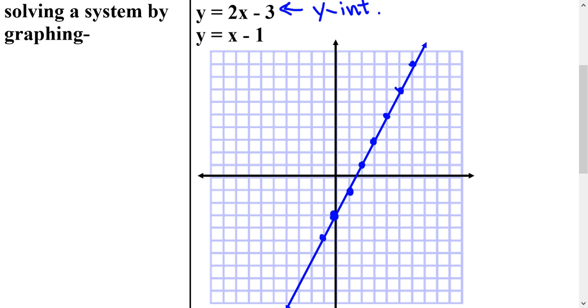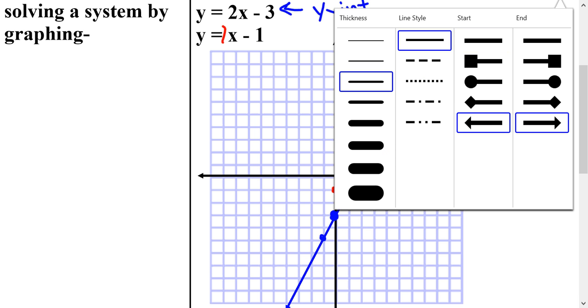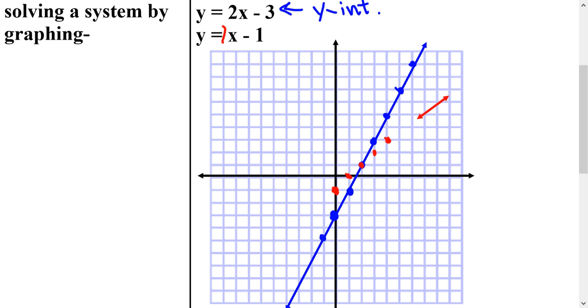And then I'm going to graph the other one in red so we can tell which one is which. So then I'm going to start with the y-intercept on the second equation, which is negative 1. And my slope, there's no number in front of x, which means that my slope is 1 or 1 over 1. So I would go up 1, right 1, up 1, right 1. And then we can now see where the two points cross. So I'm going to draw my second line.